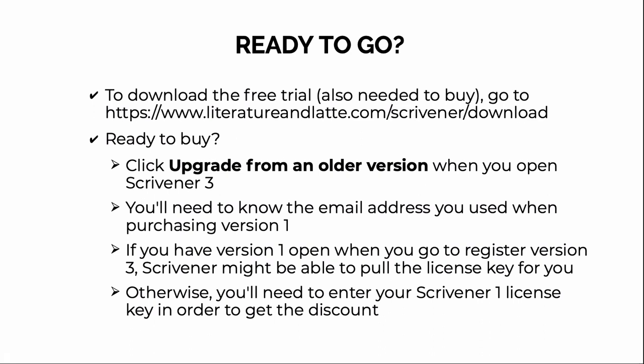Whether you're going to just try it out or you know you want to buy it, you need to download the free trial from the Literature & Latte Scrivener download page. When you're ready to buy, there'll be a pop-up window when you open Scrivener 3 — just tell it to upgrade from an older version. To upgrade, you'll need the email address you used when purchasing version 1 and your license key. If you have version 1 open when you register version 3, Scrivener might be able to pull the license key for you; otherwise you'll need to look up your registration information and enter it to get the discount.